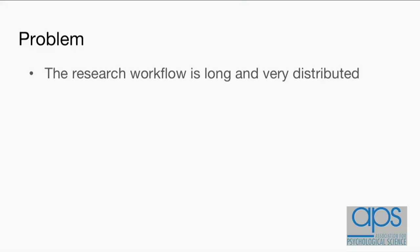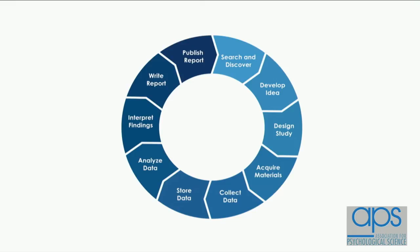As Brian alluded to in the first section, one of the problems we face as researchers is that the research workflow is very long and very distributed. It has a lot of pieces and parts to it. We start with search and discovery, and then there are a whole bunch of steps, and then finally, maybe a couple years later, we get to the published report. And if I'm not in your lab, the only thing I ever see is the published report. I don't know any of the other things that happened.